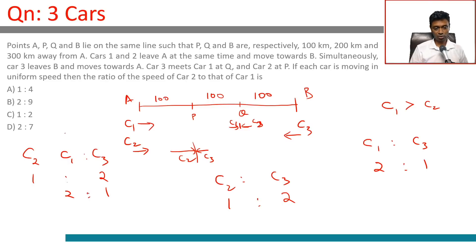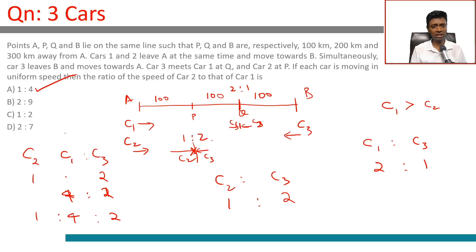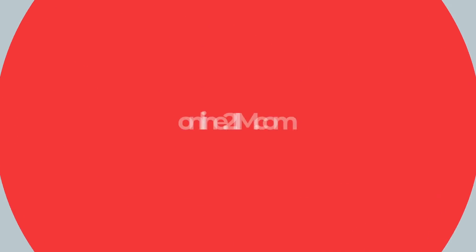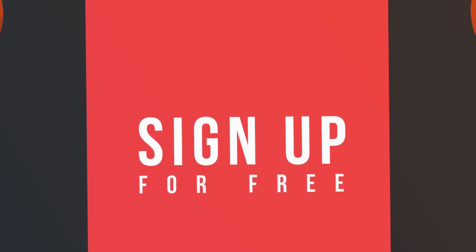Car 2 to Car 3 is 1:2, and Car 1 to Car 3 is 2:1, which can be written as 4:2. So the ratios are 1:4:2, and Car 2 to Car 1 is 1:4 — that is the answer. Once you know the ratio of speeds between Cars 1 and 3, and Cars 2 and 3, you can find the ratio between Cars 2 and 1. It's a very simple question — no heavy-duty speed-time-distance needed, just thinking in ratios.